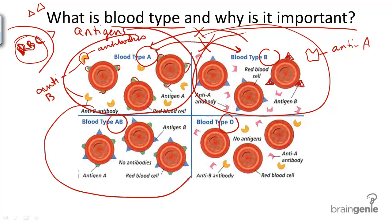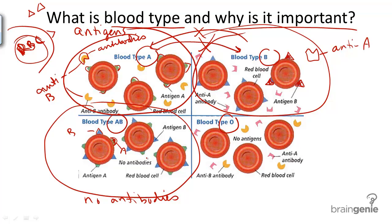The next two blood types are somewhat special. Blood type AB has both antigen proteins on its surface — you can see antigen A and antigen B. So what kind of antibodies will it produce? It won't produce any antibodies, because if it produced antibodies such as anti-B or anti-A, it would attack itself.